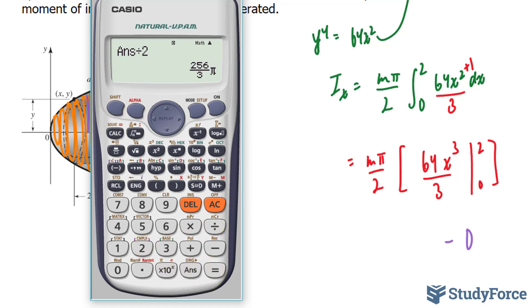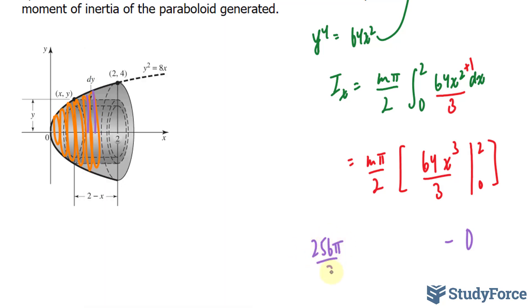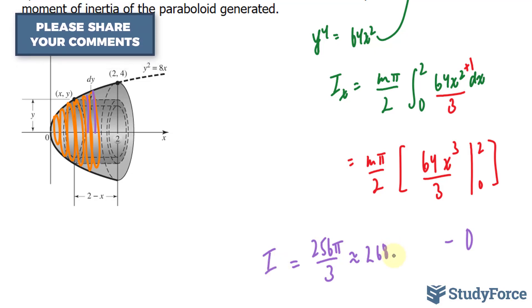We end up with the exact same moment of inertia as when we did it with the shell method, which is 256 pi over 3, roughly equaling 268, and that is our final answer. Don't forget the m, because that was never given to us.